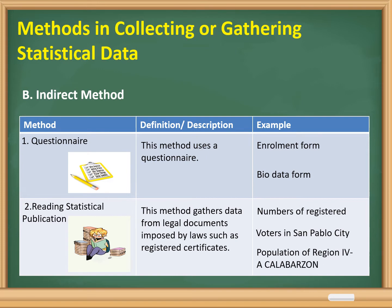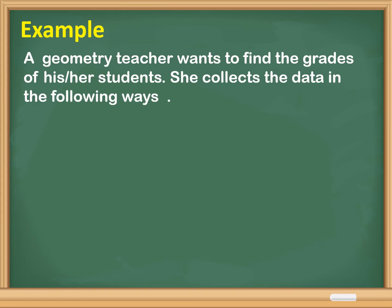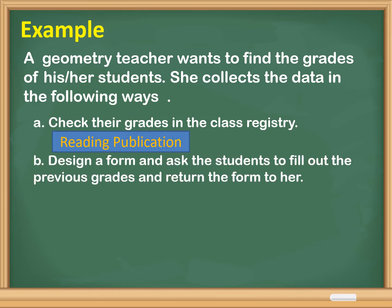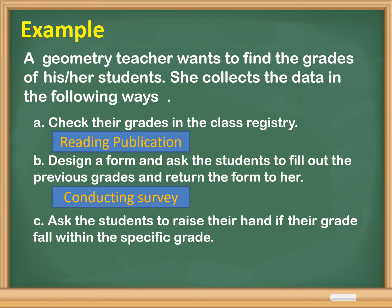For example, a geometry teacher wants to find the grades of his or her students and collects data in the following ways. Letter A: their grades in the class registry — she collects data by reading publications. Letter B: she designs a form and asks students to fill out their previous grades and return it to her — she collects data by conducting a survey. Letter C: she asks students to raise their hand if their grade falls within a specific range — she collects data by observing outcomes.